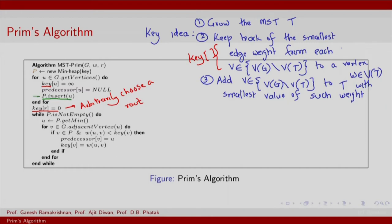P is basically maintained as a min heap. However, at initialization, you specify that the key that the min heap should use is this array. It is based on this array that the next smallest element should be retrieved. Now you iterate over this min heap, get the smallest element from the min heap, and that corresponds to step number 3: add vertex V to T with the smallest value of such a weight, and that is exactly what we do here.